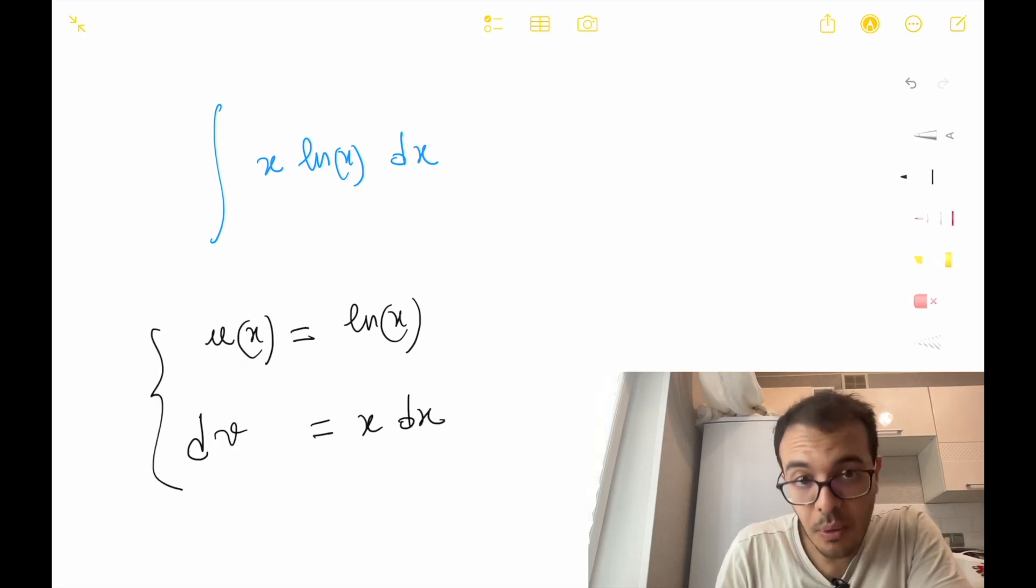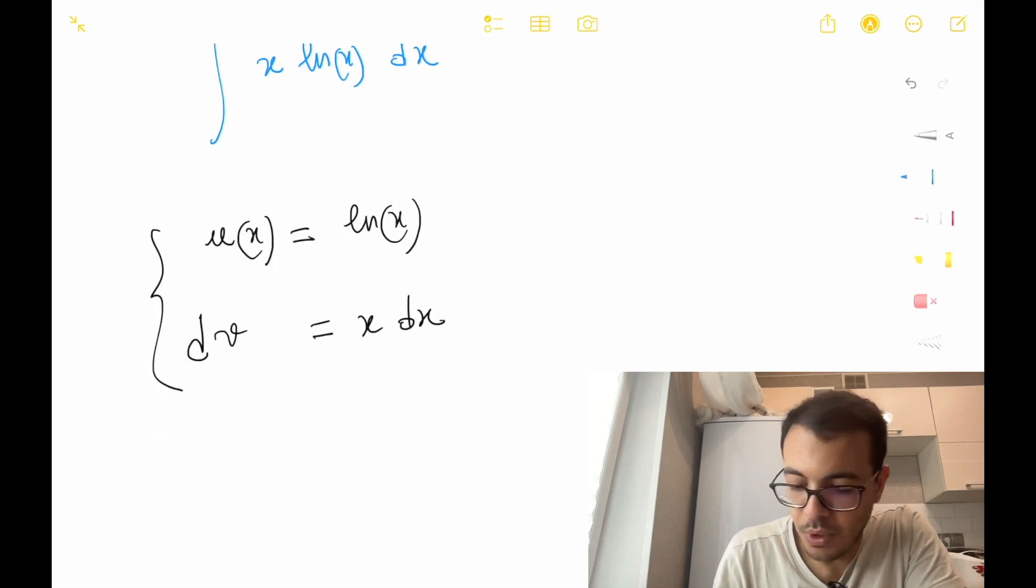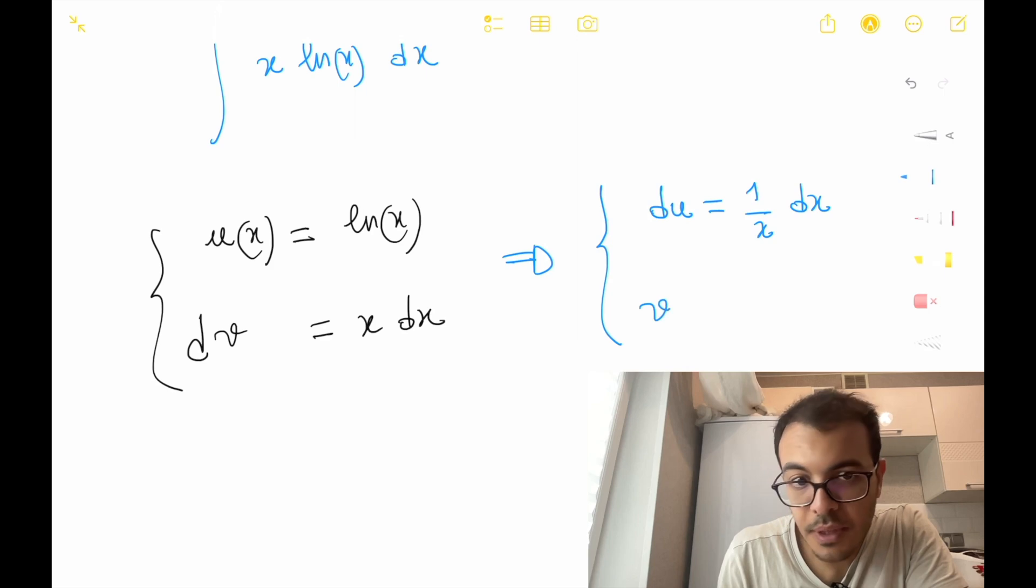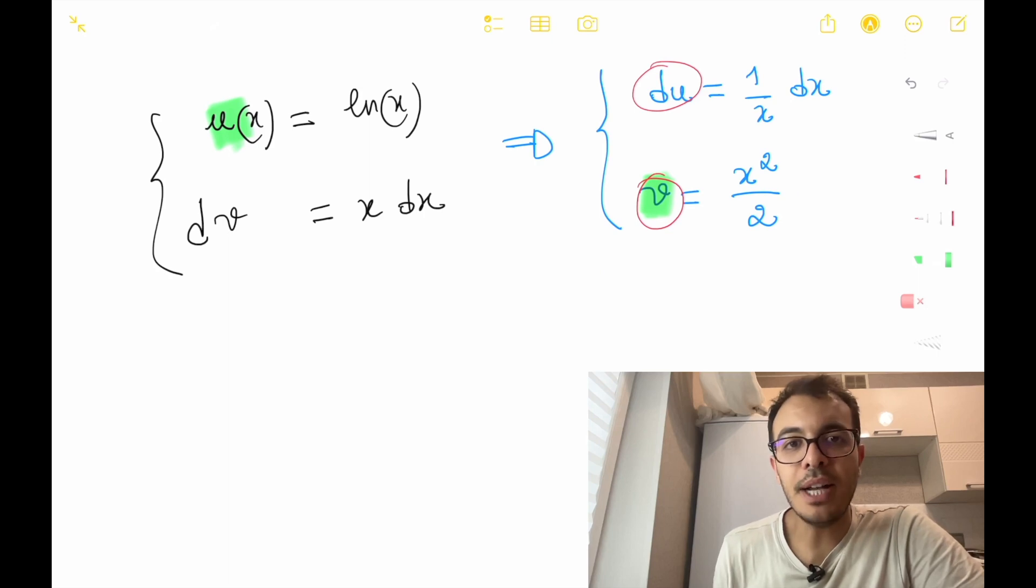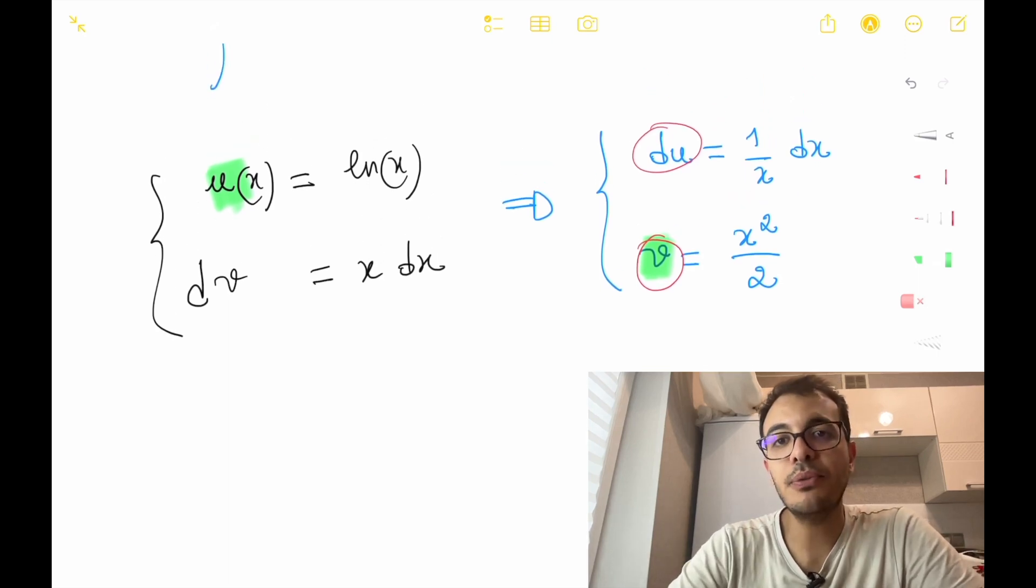Let's find du and v. Differentiating u gives us du equals 1 over x dx, and integrating dv yields v equals x squared over 2. Now we can plug these values into the integration by parts formula we have already seen.